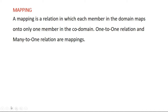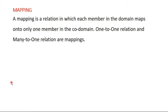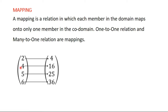In the previous video we looked at what a domain and a co-domain is. From that video we saw that if you have a one-to-one relation, one element in the domain maps onto only one element in the co-domain, so it satisfies the definition of a Mapping because it says that each member in the domain must map onto only one member in the co-domain.